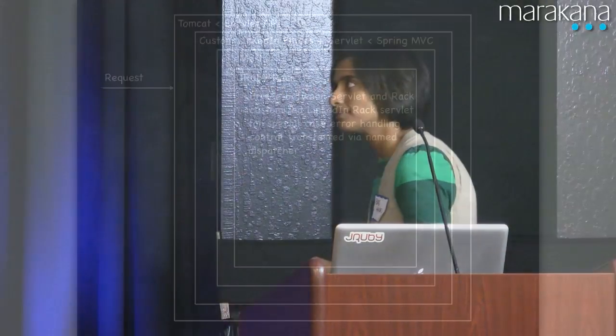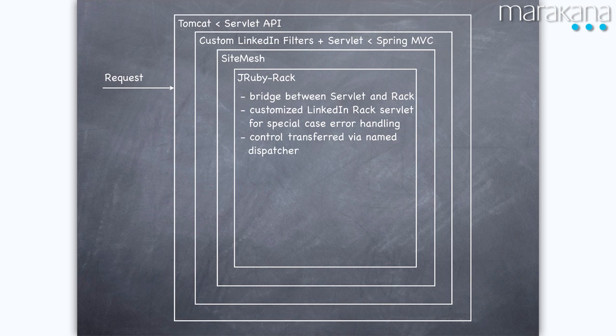From SiteMesh, we go into a piece of software called JRuby Rack. Rack is sort of an analogy to the Java Servlet API — a unified Ruby web application framework that specifies an interface. Where the Java Servlet API has service, post, get, delete, Rack has an interface called 'call' which gets a request and returns a response. JRuby Rack exposes a Servlet API but accepts a Ruby Rack application and can call into that Ruby Rack web application.